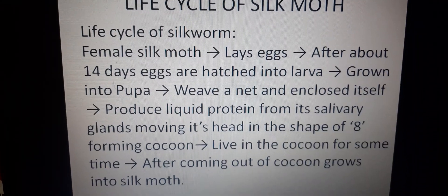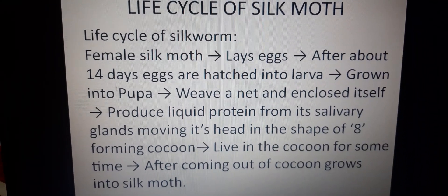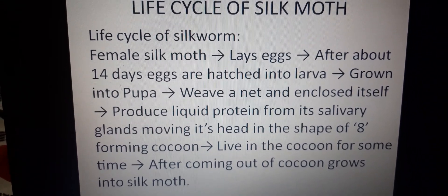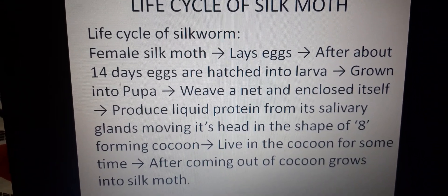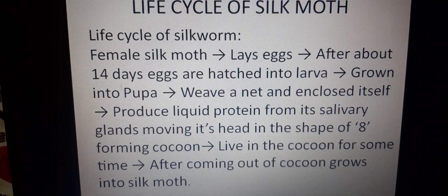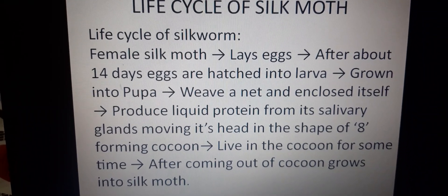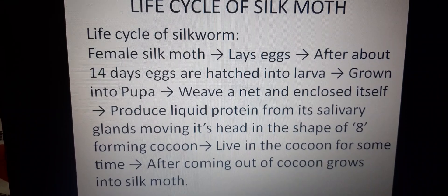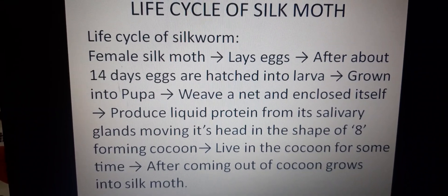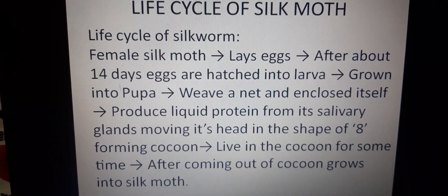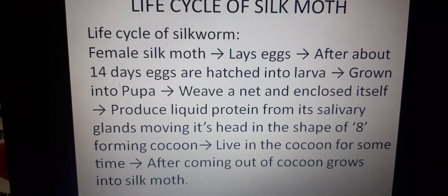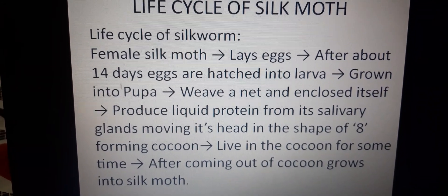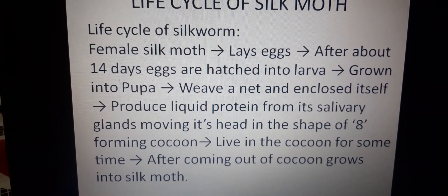Now let us see the life cycle of a silk moth. The female silk moth lays eggs. The eggs are yellow in color. After a few days, the eggs turn gray in color and they hatch. After 14 days, they hatch to form larva.